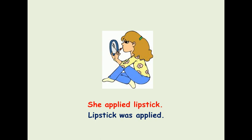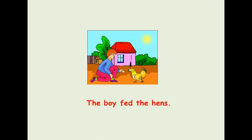The most important thing in passive voice is the verb 'to be,' and 'to be' takes the conjugation of the main verb. For example: 'The boy fed the hands' — 'fed' is the past of 'feed' — and we say: 'Hands were fed by the boy.'